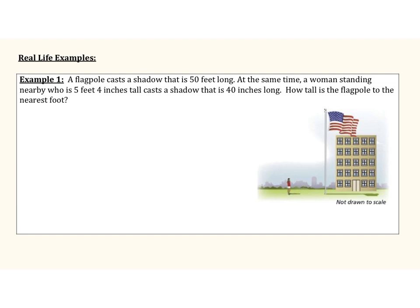We're going to apply our similar triangle theorem to a real-life situation. A flagpole casts a shadow that is 50 feet long. At the same time, a woman who is 5 feet 4 inches tall casts a shadow that is 40 inches long. How tall is the flagpole to the nearest foot? We can set up a ratio using similar triangles — one triangle representing the woman and her shadow, another representing the flagpole and its shadow.